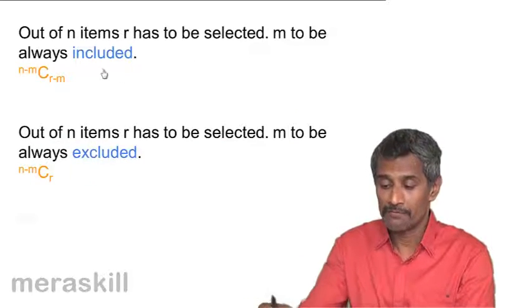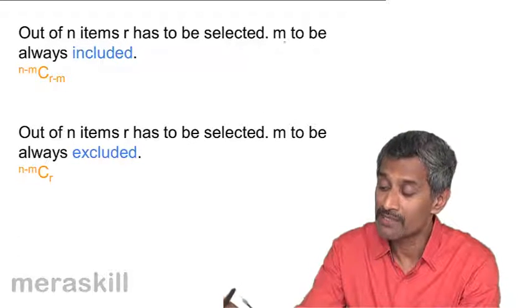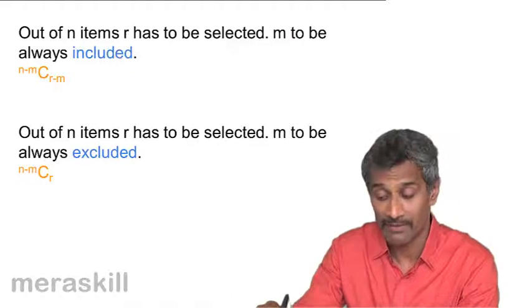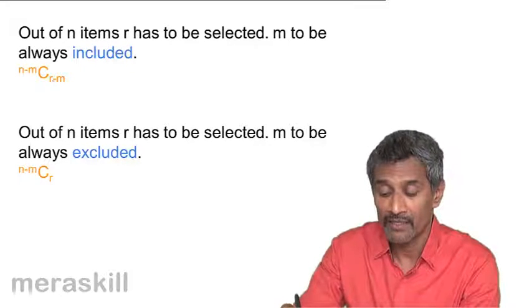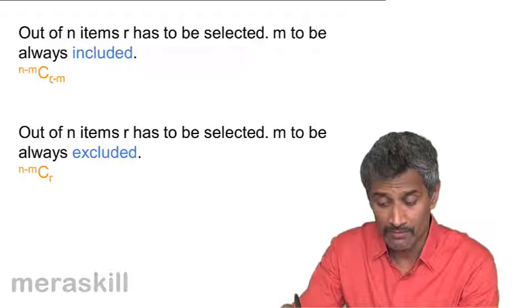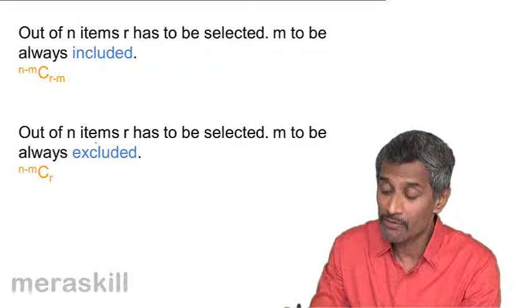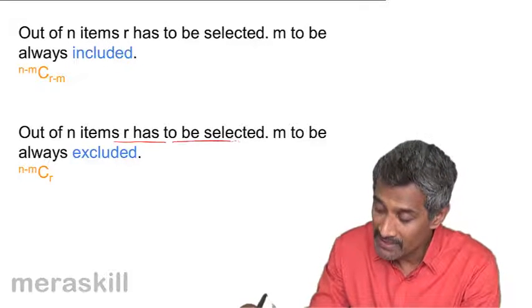So, see for example here, suppose out of N items, R has to be selected, M always to be included, then the remaining term, that is R minus M, have to be picked out of N minus M.